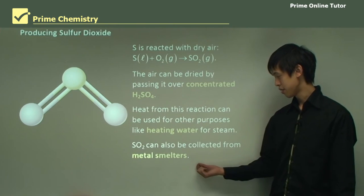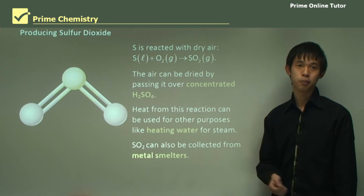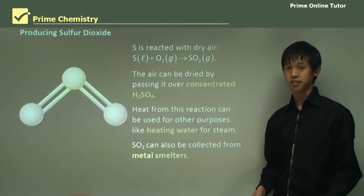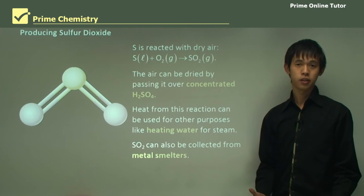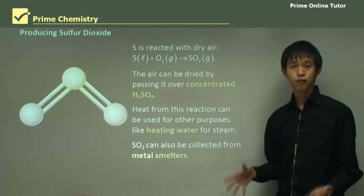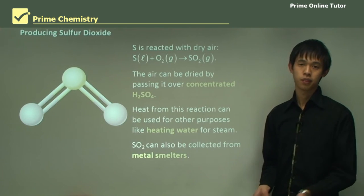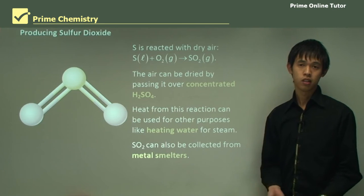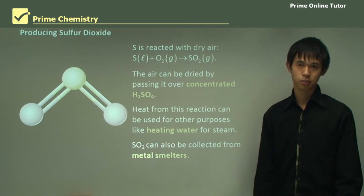SO2 can also be collected from metal smelters. Remembering from earlier topics, particularly with regard to acid rain, metal smelting was one of the big contributors to sulfur dioxide in the air. So if we can collect it before it gets to the atmosphere, we can just use it — it's exactly the same chemically, so why not use it for this process and kill two birds with one stone.